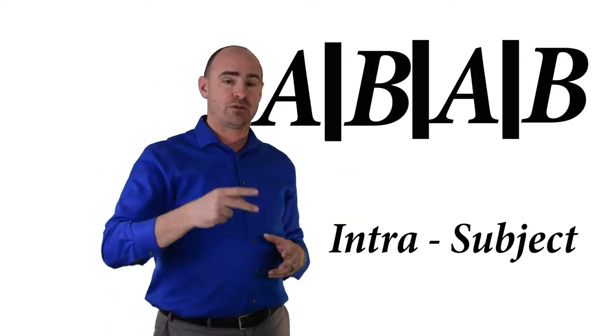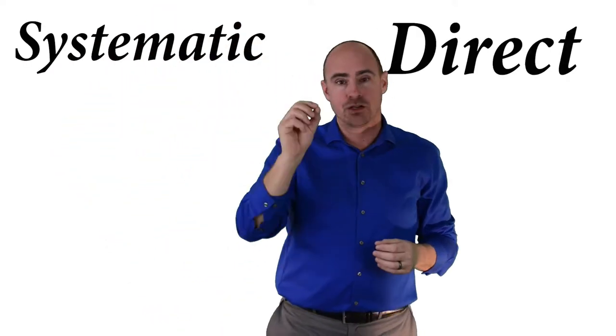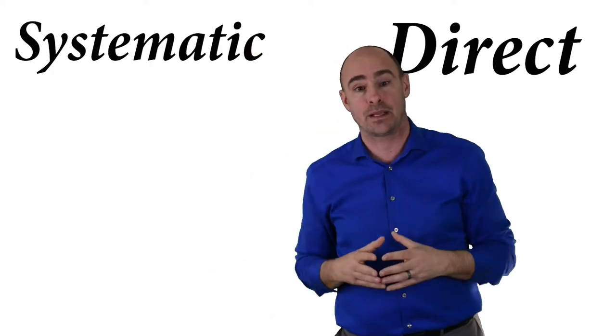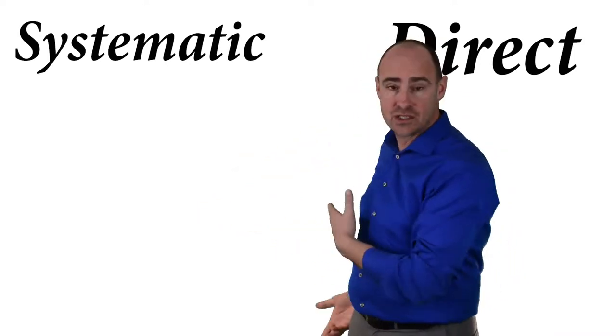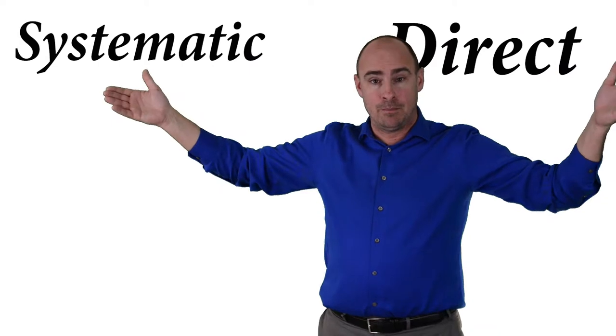So those are the two types of replication that we find inside of the experiment. So let's take it out a little bit bigger, all right? So Sidman also talks about systematic replication and direct replication. So for quality experimentation, we're going to need direct replication, all right? So that's the key to all science.